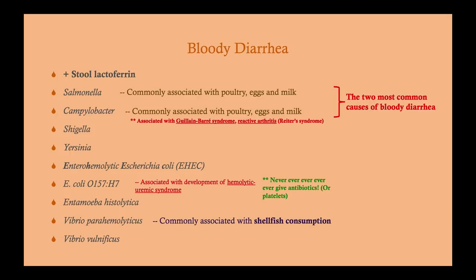Vibrio parahemolyticus is associated with shellfish consumption — oysters, shrimp, crabs. Vibrio vulnificus is similar, but there's an increased incidence in patients with liver disease or a high iron state, because Vibrio vulnificus thrives on iron. So patients with a high iron state are more likely to get Vibrio vulnificus. Both of these are quite rare.